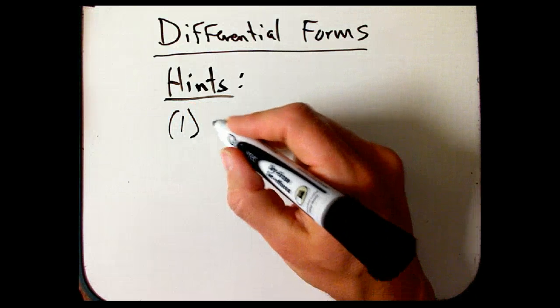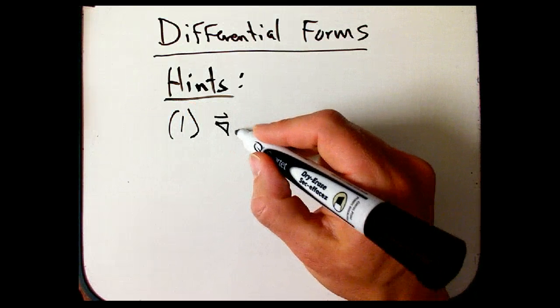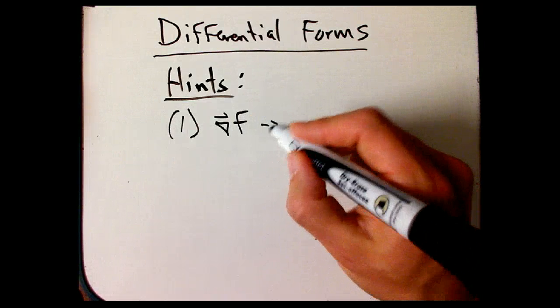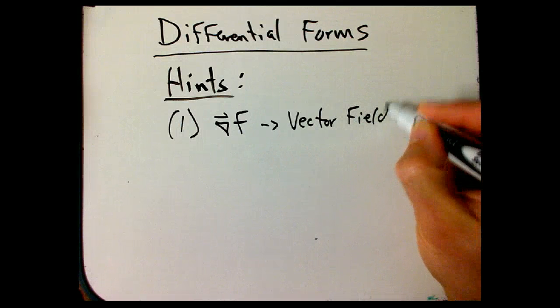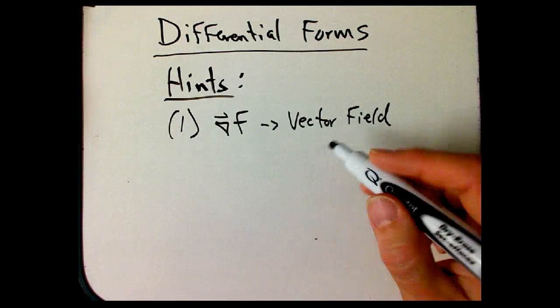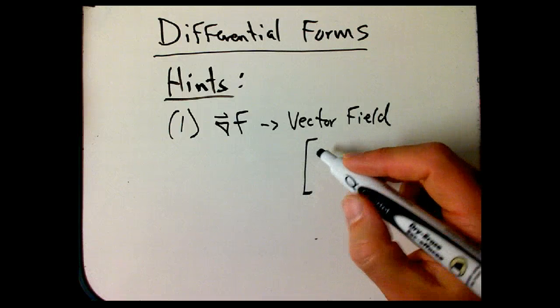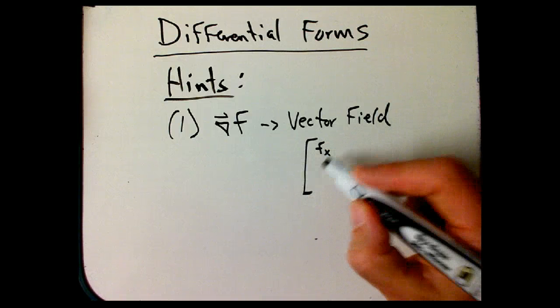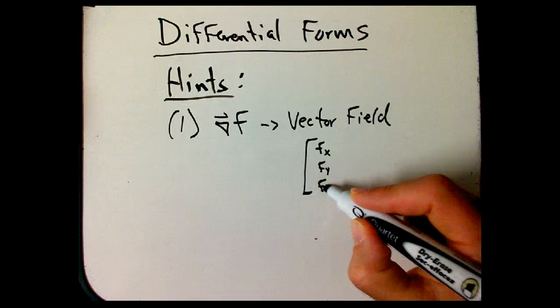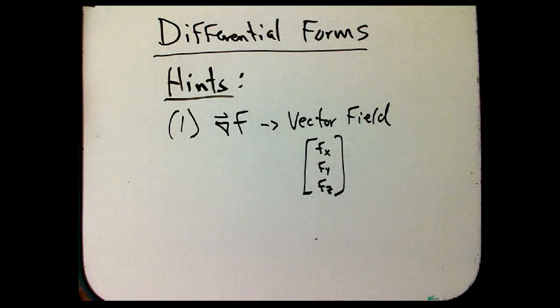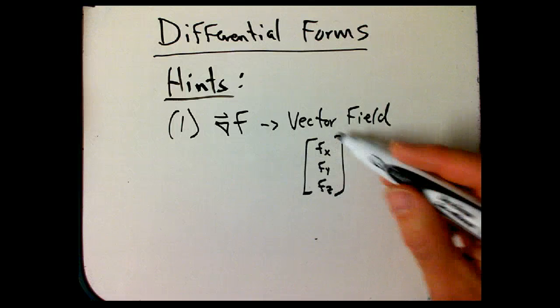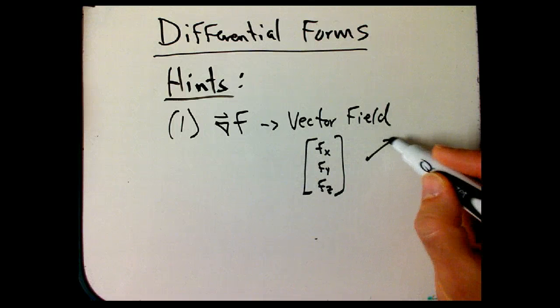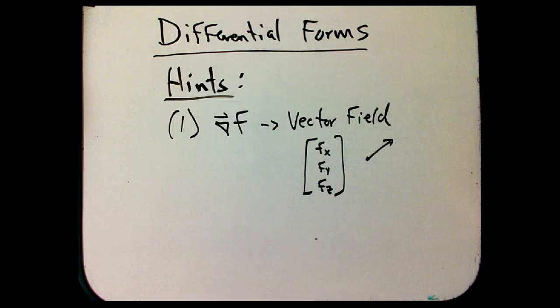One is that when we have a function f and we take its gradient, we think of that as a vector field. So that's assigning to every point in space a column vector f sub x, f sub y, f sub z. I'm going to do this all in three dimensions for a while.